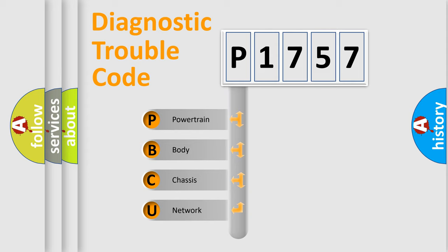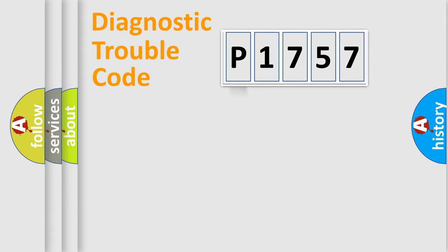We divide the electric system of automobile into four basic units: Powertrain, Body, Chassis, and Network. This distribution is defined in the first character code.